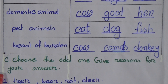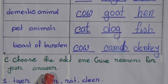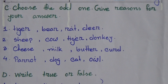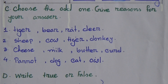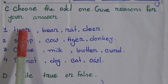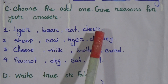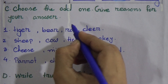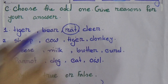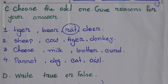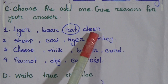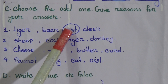Exercise Number C: Choose the odd one and give a reason for your answer. Number 1: Tiger, bear, rat and deer. Here, the odd one is rat. Why? Because tiger, bear and deer are all wild animals, but a rat is not a wild animal.